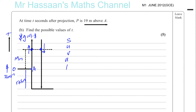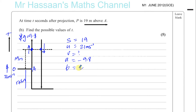Let's write everything down using SUVAT. The displacement s is positive 19 meters — 19 meters above our zero position, taking up as positive. u is 21 meters per second (positive). The velocity v we don't know and don't need. The acceleration a is minus 9.8. We need to find t. The equation to use with s, u, a, and t is: s equals ut plus one half at squared.